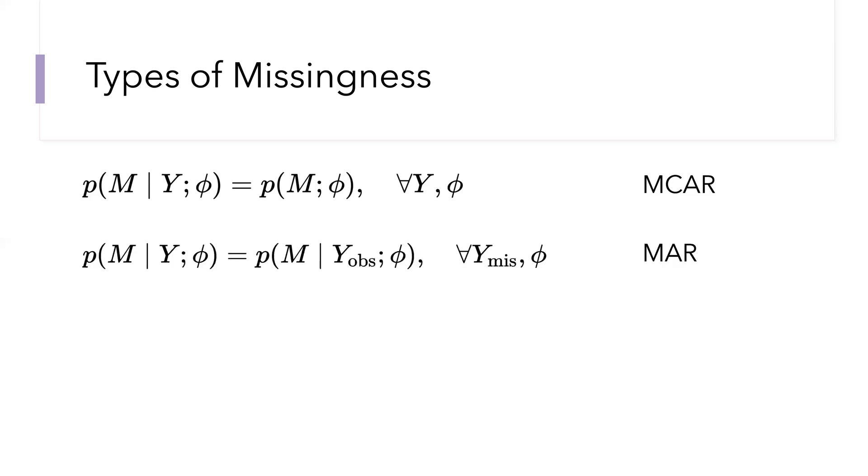The model for the missingness matrix depends only on the observed values. It does not depend on the missing values. This assumption is the one that's commonly used in many off-the-shelf imputation algorithms or matrix completion methods, because it basically assumes that we can recover the model for the missingness given the pattern of observed intensities.